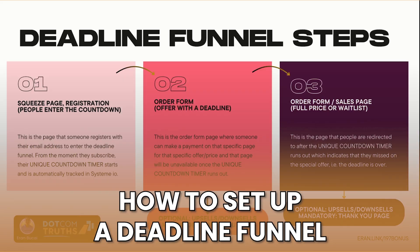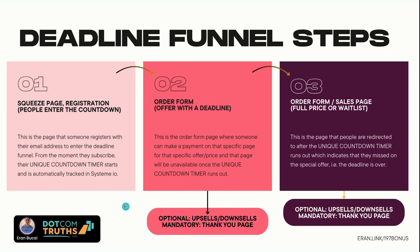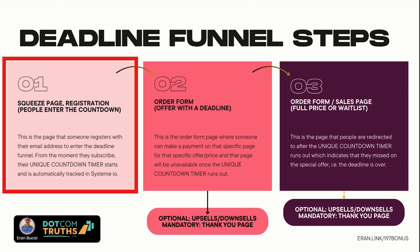So how do you set it up? Step number one: if you want to have a squeeze page or registration, people enter the countdown — this is when the countdown starts for that person. This is the page where they register their email address to enter the deadline funnel. From the moment they subscribe, their unique countdown timer starts, and it's automatically tracked in System.io for that one individual.